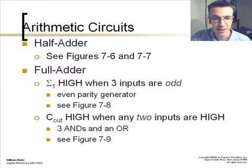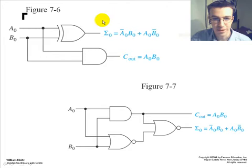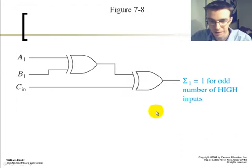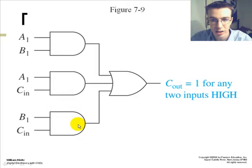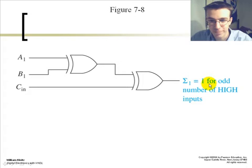A half adder circuit versus a full adder circuit. Full adder is high when 3 inputs are odd. It's an even parity generator. The C out is high when 2 inputs are high. The 3 ANDs and an OR. And your C out in this one is 1 for any 2 inputs high. Unlike this one, your sigma 1 is 1 for odd number of high inputs.